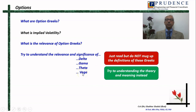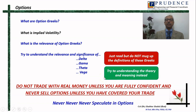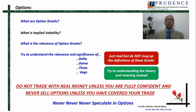Once you understand these things, you will be able to take appropriate decisions. One more caution: when you are trading in derivatives — be it futures or options — do not trade with real money unless you are fully confident. When trading in options, never sell options unless you have covered your trade. Never, never, never speculate. Do not try to gamble — these are not gambling tools. They are scientifically designed financial instruments. Make proper use of them and do not make them a gambling tool. That is all I have to say about derivatives.